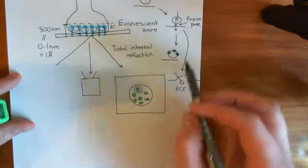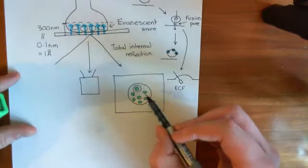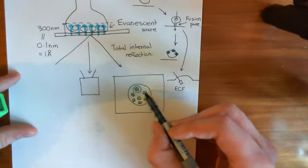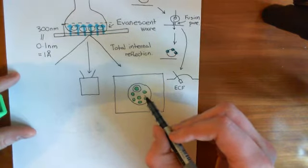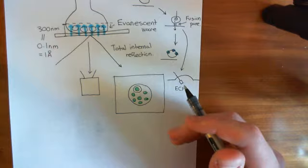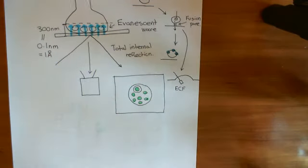Whereas, if kiss-and-run fusion exists, what you will see is you'll see a green fluorescent dot appearing on this axon terminal, and then it will go after a certain amount of time. If we saw that, that would have been a nice confirmation of kiss-and-run fusion.